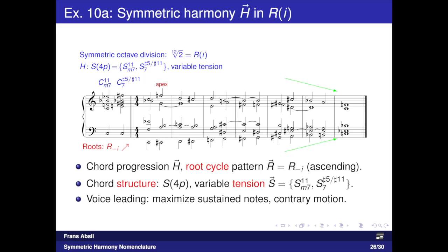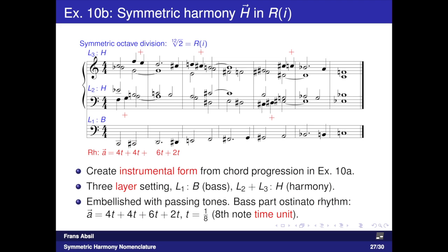The final example demonstrates negative root cycles and variable tension in the 12-tonic symmetric system. There are two four-part chord structures: a minor 7th chord with added 11th, and an altered dominant chord. In the voice leading there is a focus on creating a maximum number of sustained notes, and the overall tendency is closing contrary motion towards the end. The instrumental form created from this basic chord progression involves a setting in three layers — a lower layer with bass function and two layers containing harmony — with passing tones embellishing the harmony parts and a rhythmic ostinato in the chromatically ascending bass part.